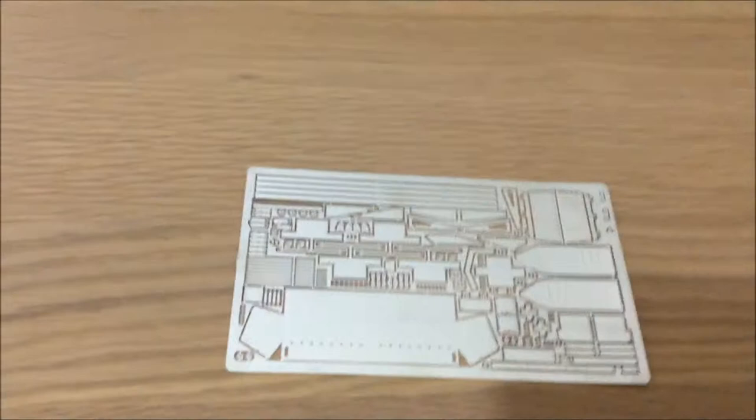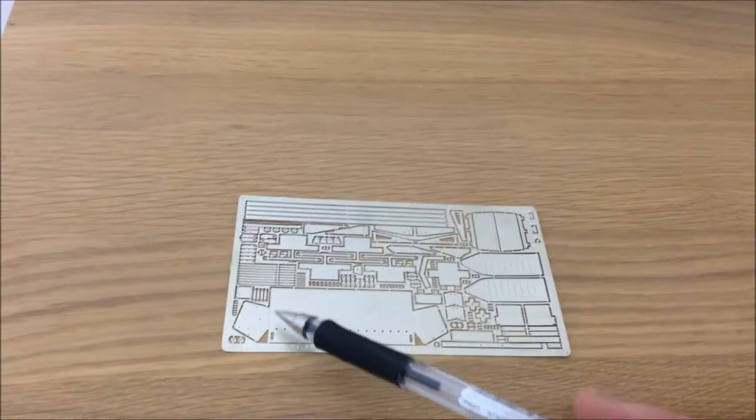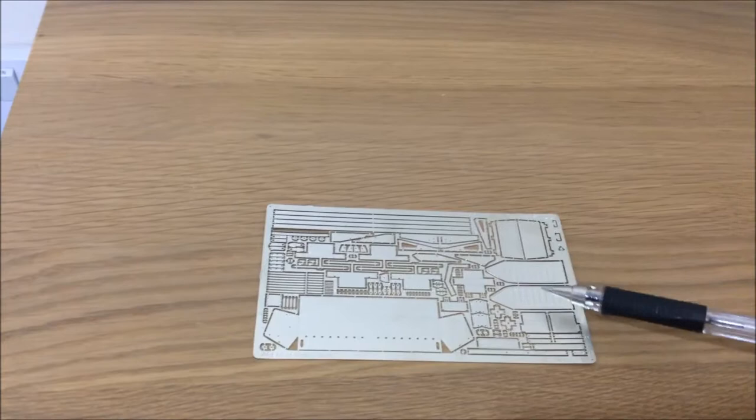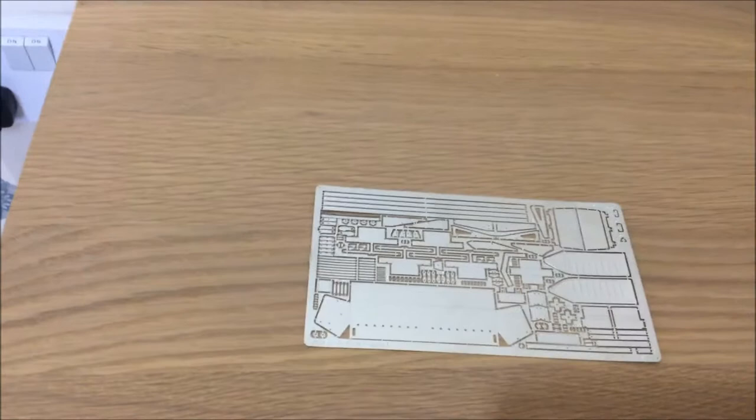We come onto the first piece of photo-etch. This piece here is for the hammock at the back of the hull. We get some jerry can holders. I think these are part of the fenders, I'm not quite sure. And these are the supports of the fenders that I am sure of.